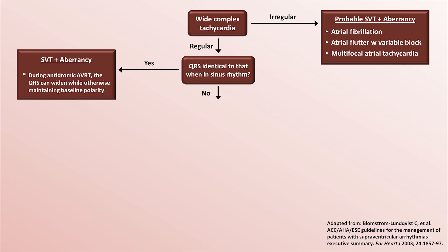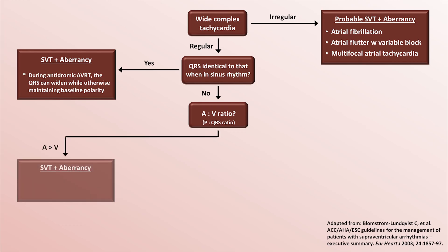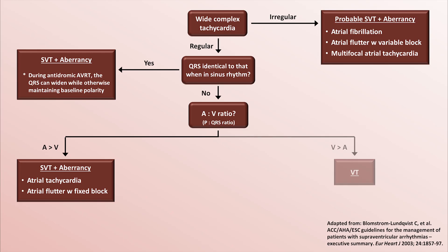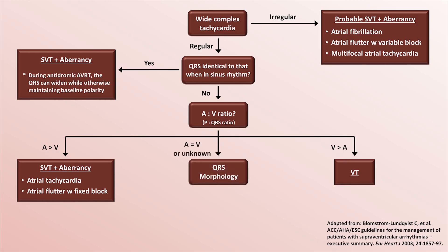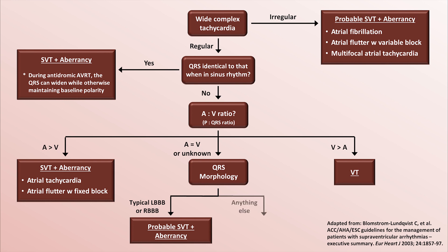If the QRS is not identical to that when in sinus rhythm, examine the A to V ratio, meaning the ratio of P waves to QRS complexes. If there are more P waves, the patient has SVT with aberrancy, specifically either atrial tachycardia or atrial flutter with fixed block. If there are more QRS complexes than P waves, the patient must have AV dissociation and thus VT. On the other hand, if there is a one-to-one relationship between P waves and QRS complexes, or it's unknown because there is no visible atrial activity, look at the QRS morphology once again. If it's typical of a classic left or right bundle branch block, then it's probable SVT with aberrancy. If the morphology is anything other than a classic bundle branch block, then it's probably VT.